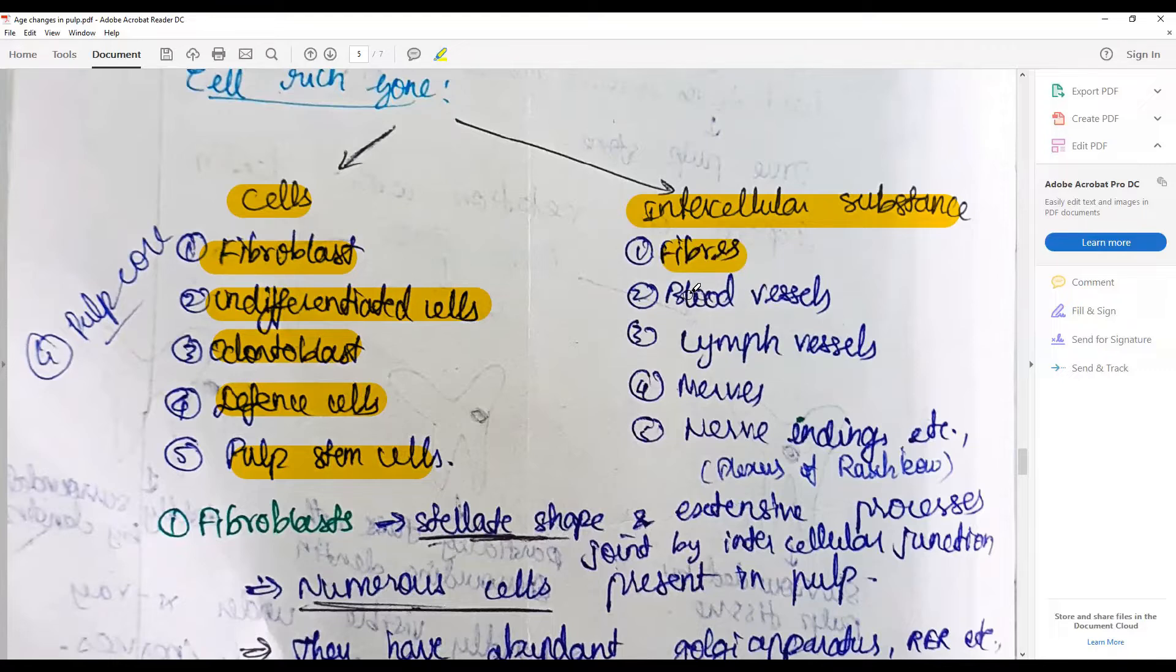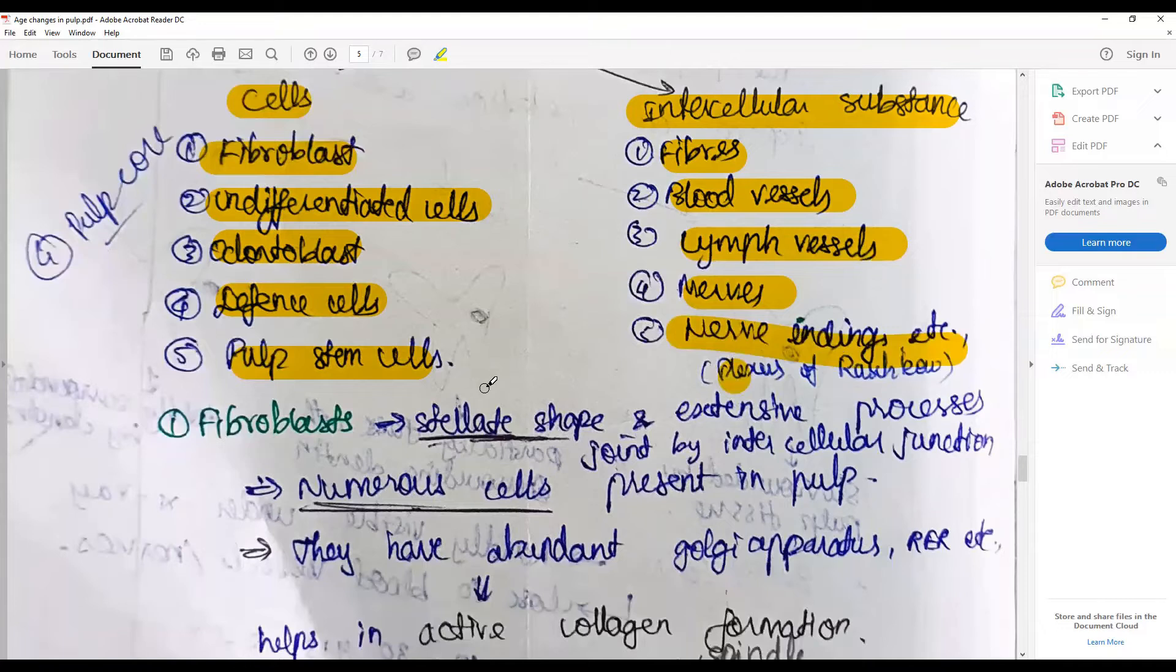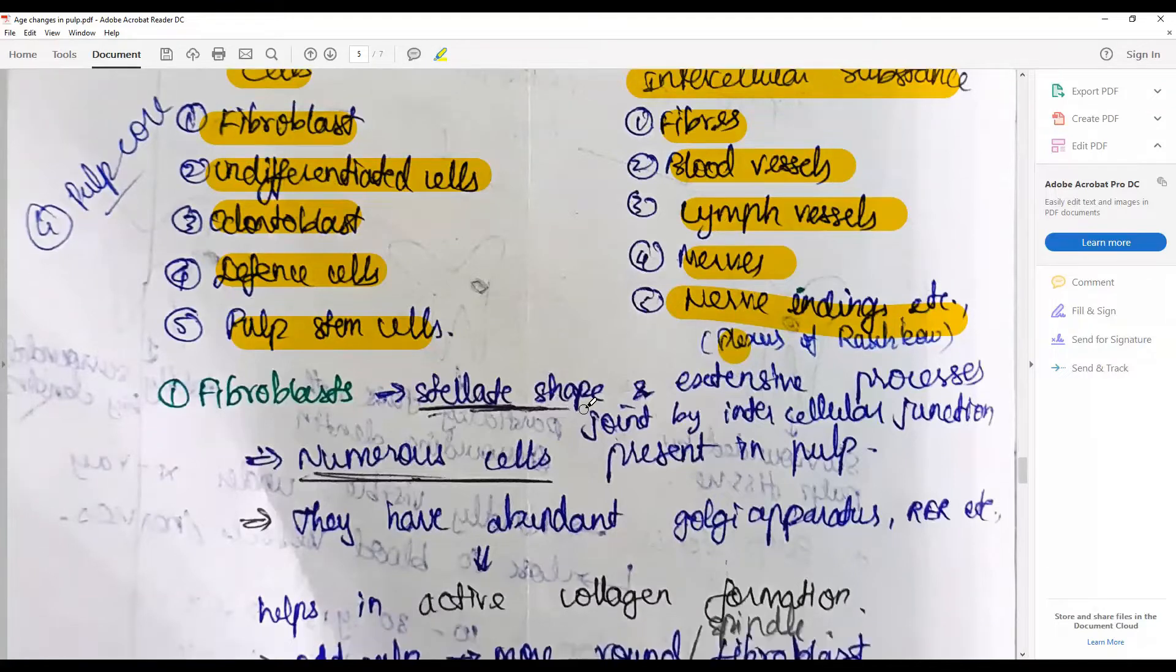These include blood vessels, lymph vessels, nerves, nerve endings, and receptors such as forming the plexus of Raschkow. Fibroblasts are stellate-shaped cells and comma-shaped cells with extensive processes joined by intracellular junctions. Numerous of them are present in the pulp.